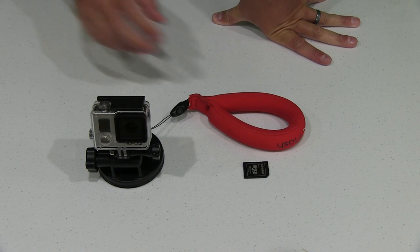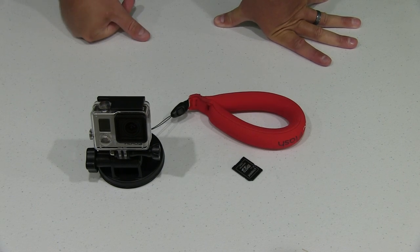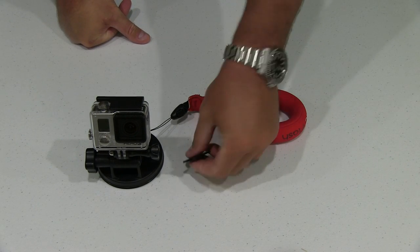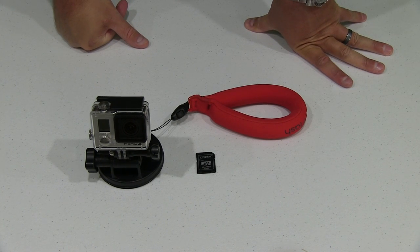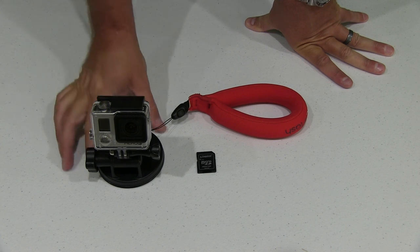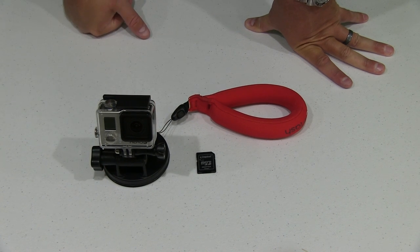So again check this video description. You can find a link to not only the Kingston 32 gig micro SD card, but also a link to the GoPro HD Hero 3 Plus Black Edition.